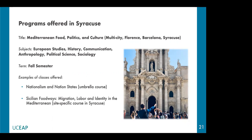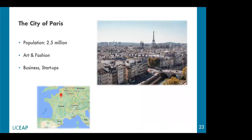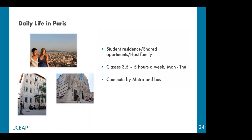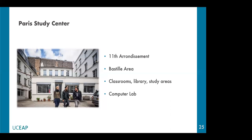Now we move north to France — Paris. Everybody knows Paris, so I won't spend a lot of time introducing it. It's the capital city of France and a hub for the worlds of arts, fashion, and business. It's a pretty big city with a population of about 2.5 million people. In Paris, students will be able to choose between a shared apartment and living with a French host family. Class averages 3.5 to 5 hours per day, Monday through Thursday, and classes usually begin around 9 a.m. — enough time to stop by a cafe for a coffee and a croissant. The Accent Paris Center is easily accessible by metro or bus and is located in the Bastille area.